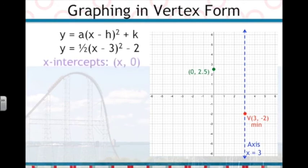Finally, we need to find the x-intercepts. x-intercepts are points on the x-axis, so the y-coordinate equals 0. To find the x-intercepts, or zeros, we substitute 0 in for y and solve for x. The equation we get, 0 equals 1 half times the quantity x minus 3 squared minus 2, is a quadratic equation.